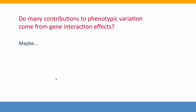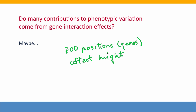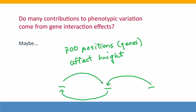Another possibility is that contributions to variation in height might come from interaction effects between different genes. If there are, say, 700 positions — likely genes — where variation affects height, on their own each gene might have only a small effect, but interactions between different combinations of these genes, the kinds of interactions we talked about in Module 4, may be responsible for a large proportion of the differences in height. The truth is researchers don't know yet — this is one of the frontiers of genetic research.